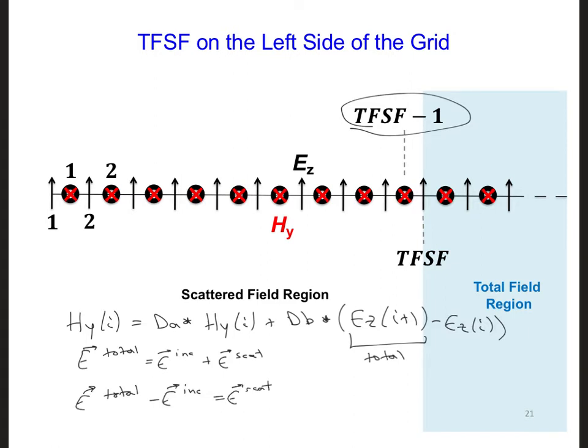This means we need to subtract the incident electric field at this location. So this means the correction for HY, after we have the regular updating loop all across the grid, we can then go back and correct the HY at TFSF minus 1, which is right at the interface and right next to it.